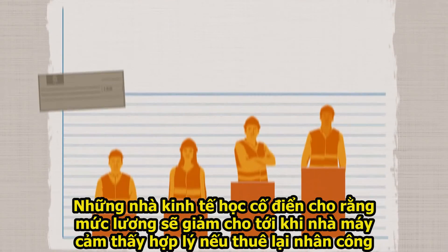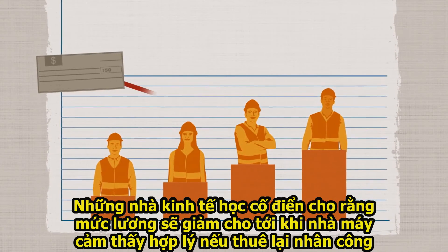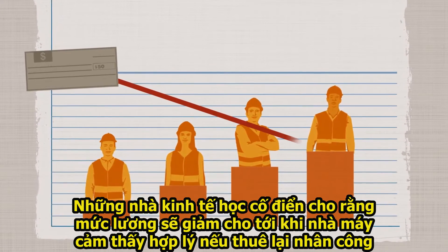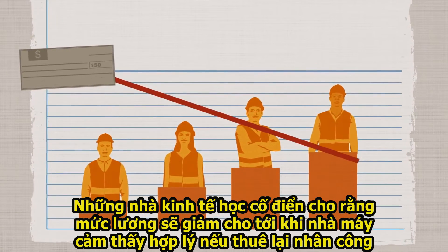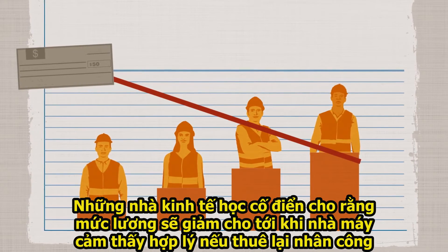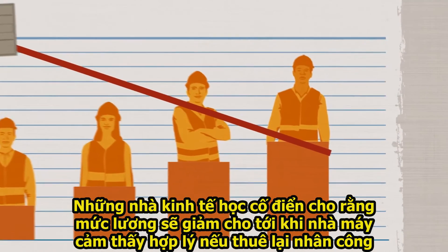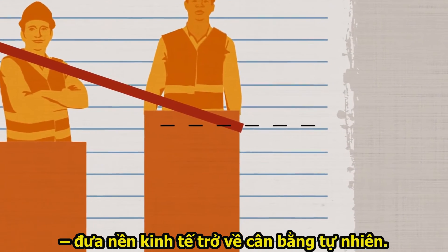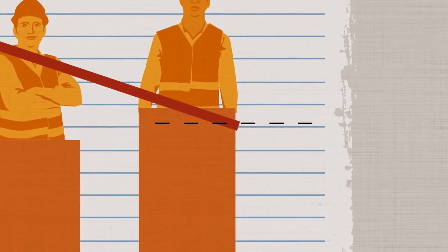Now, traditional economists believed that wages would decrease to a point where it made sense for the factory to re-employ staff, returning the economy to a natural equilibrium.